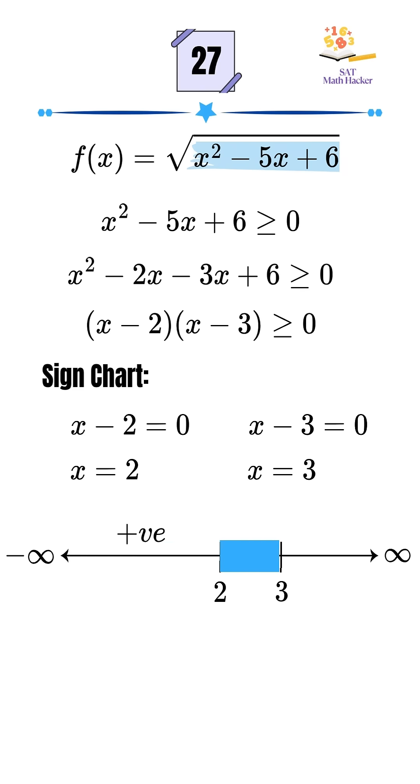In the second interval, try x equals 2.5. 2.5 minus 2 times 2.5 minus 3, that's 0.5 times negative 0.5, which equals negative.